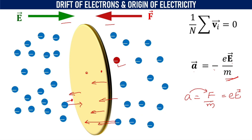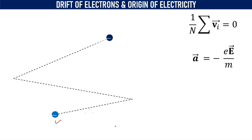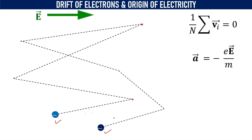Now we are going to find out the velocity of each electron in the presence of the electric field. In the absence of the electric field, the electron moves randomly — it follows a random path, and when it collides with an atom, the direction changes while keeping the velocity the same. When there is an electric field, all the electrons experience a force in the direction opposite to that of the electric field. Even then, the electron still takes a random pathway.